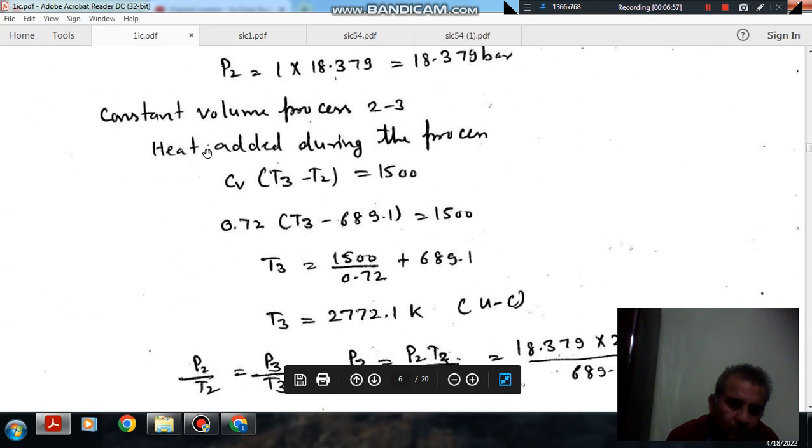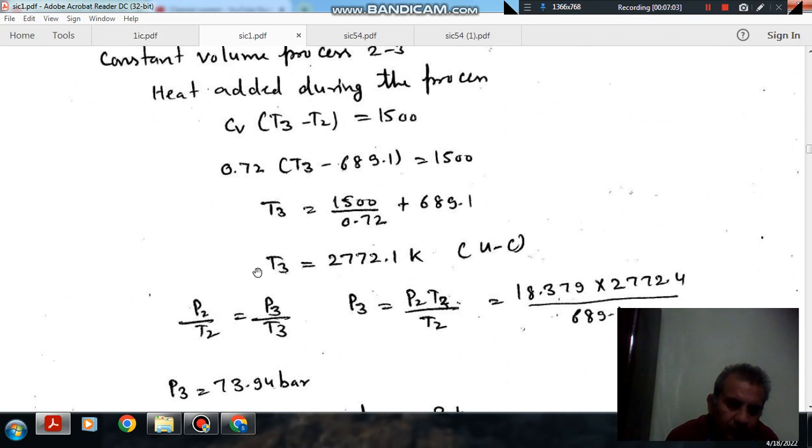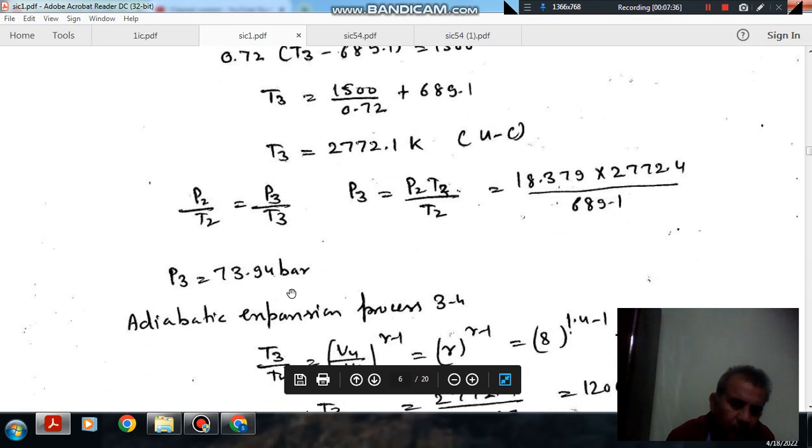So T3 will be 2772.1 Kelvin. So answer to question number 4 is C. And now once this T3 has been found out then we can find out pressure also by using T3. So this is a constant volume process so P2 by T2 should be equal to P3 by T3. So we can find out P3 which is 73.94 bar.